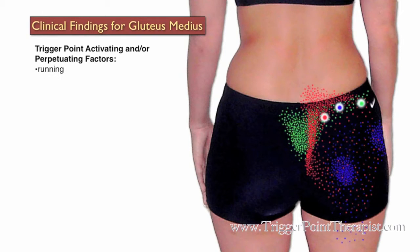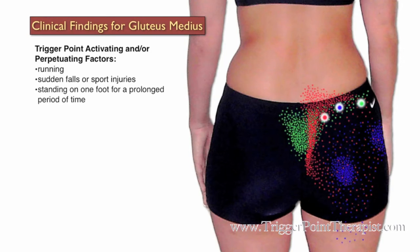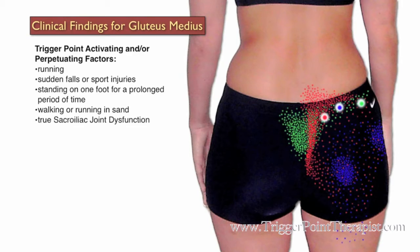Some activating factors for gluteus medius trigger points include running, sudden falls or sports injuries, standing on one foot for a long period of time, walking or running in sand, true SI joint dysfunction, intramuscular injection, and sitting on a wallet.